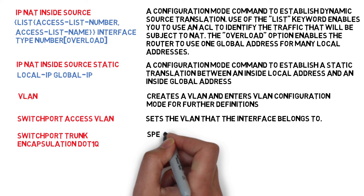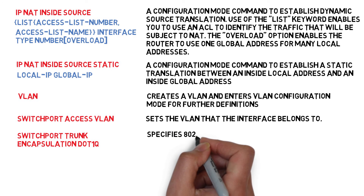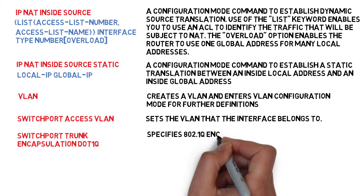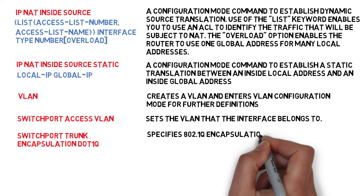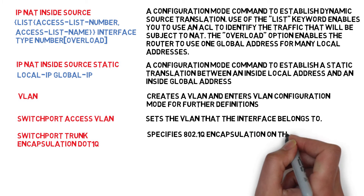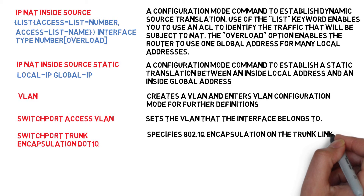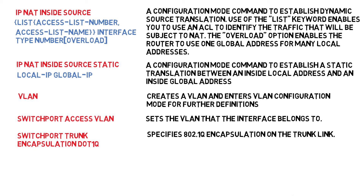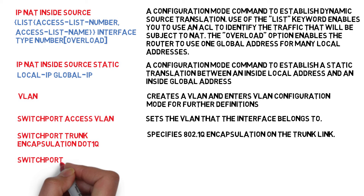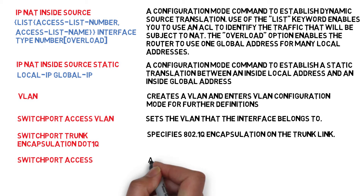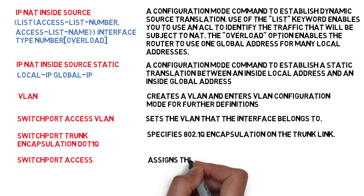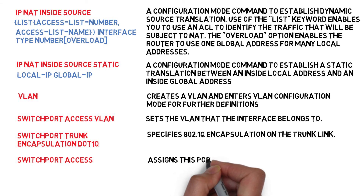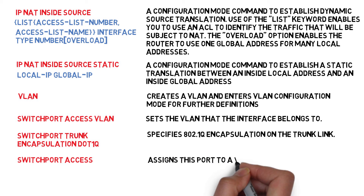Switchport trunk encapsulation .1Q — specifies 802.1Q encapsulation on the trunk link. Switchport access — assigns this port to a VLAN.